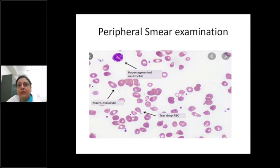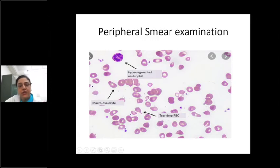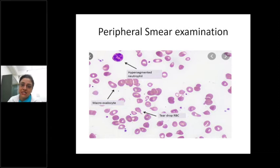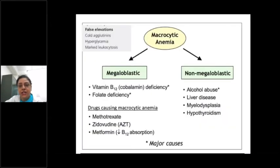This is a characteristic peripheral smear picture of megaloblastic macrocytic anemia. Apart from macrocytes, you get macro-ovalocytes — slightly oval in shape — as well as some teardrop cells and hypersegmented neutrophils. When you have a macrocytic anemia with MCV around 110 or you see ovalocytes on peripheral smear, you are almost certain you're dealing with megaloblastic anemia. The causes are B12 deficiency, folic acid deficiency, combined deficiency, or drugs.